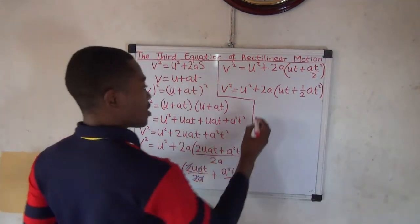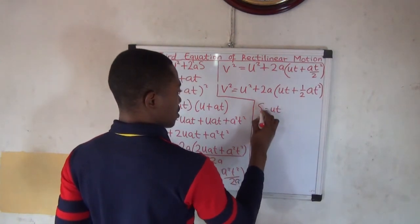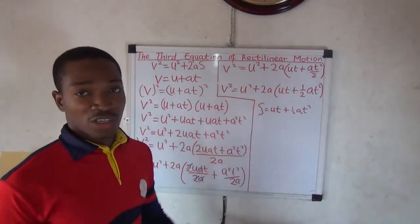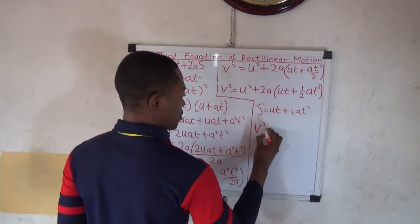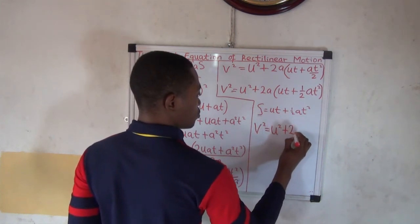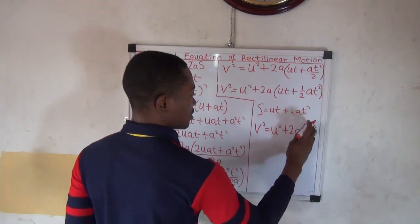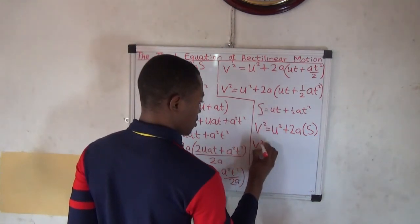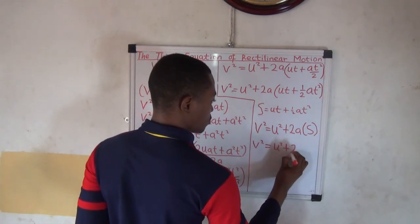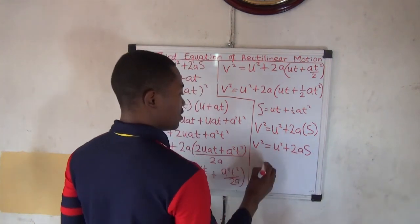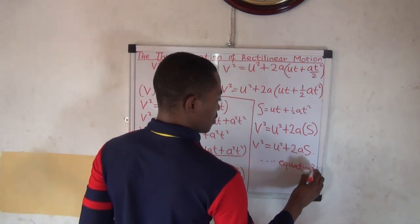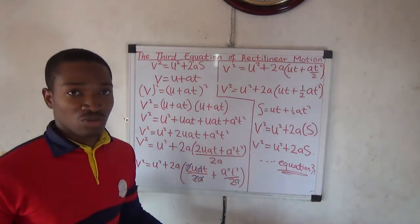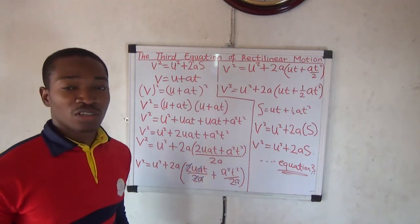Substituting S for the bracketed expression: V squared equals U squared plus 2AS. This is the third equation of rectilinear motion. This is how you derive the three equations of rectilinear motion. Next, we will be solving problems based on these three equations.